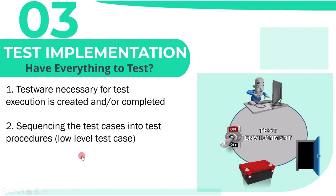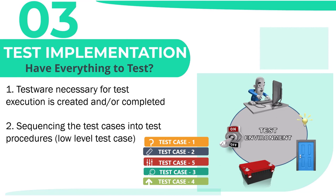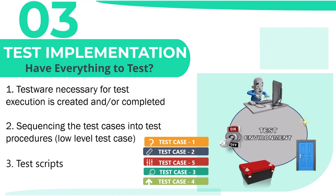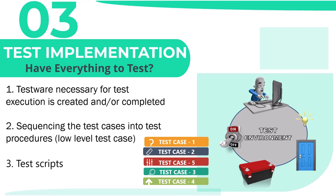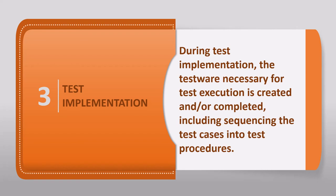The second point is sequencing the test cases into test procedures. During test design we write high-level test cases, and during test implementation we write low-level test cases, which contain the detailed sequence of actions required to perform testing. The last point relates to test scripts — this comes into picture if you are doing automation. Using high-level test cases you develop test scripts which can be executed automatically with the help of test automation tools. That's why we say during test implementation the testware necessary for test execution is created and/or completed, including sequencing the test cases into test procedures.